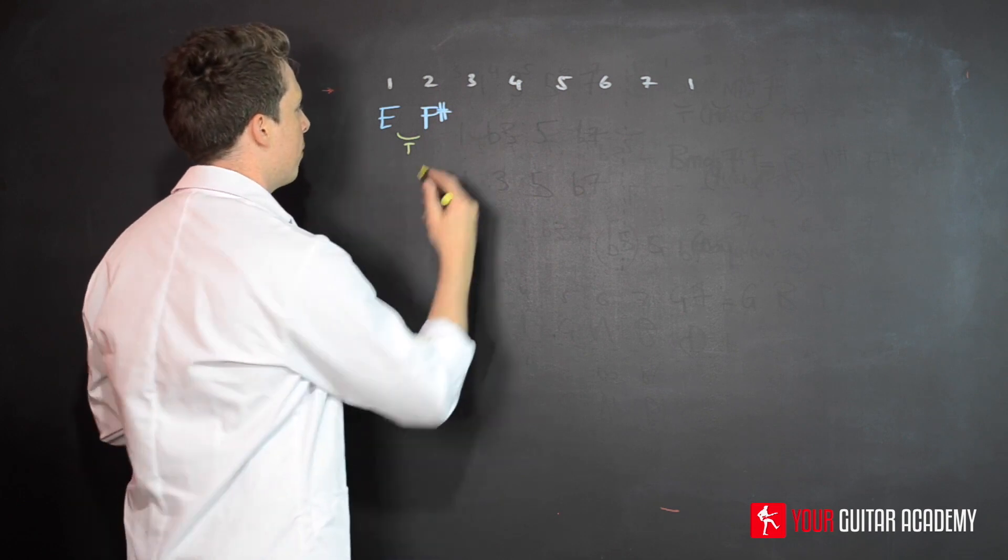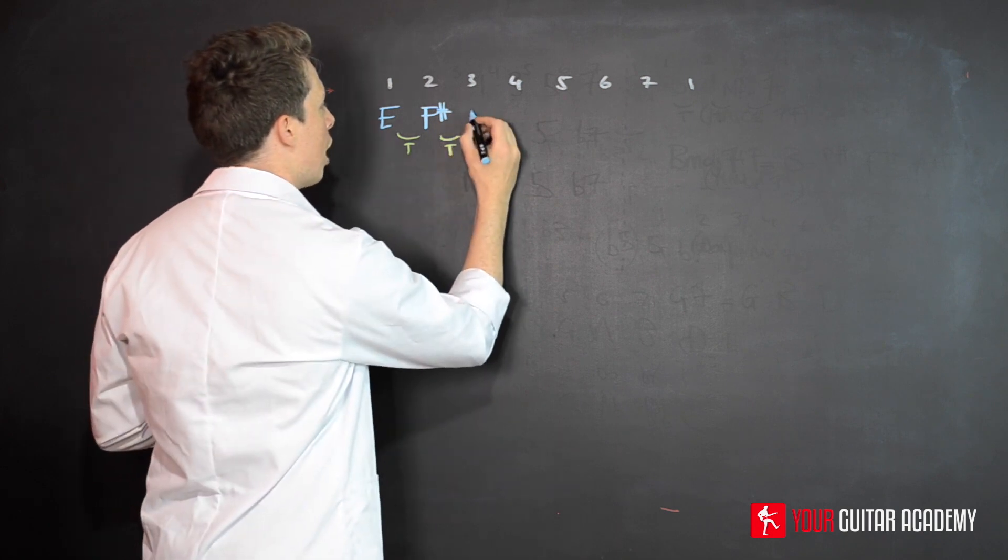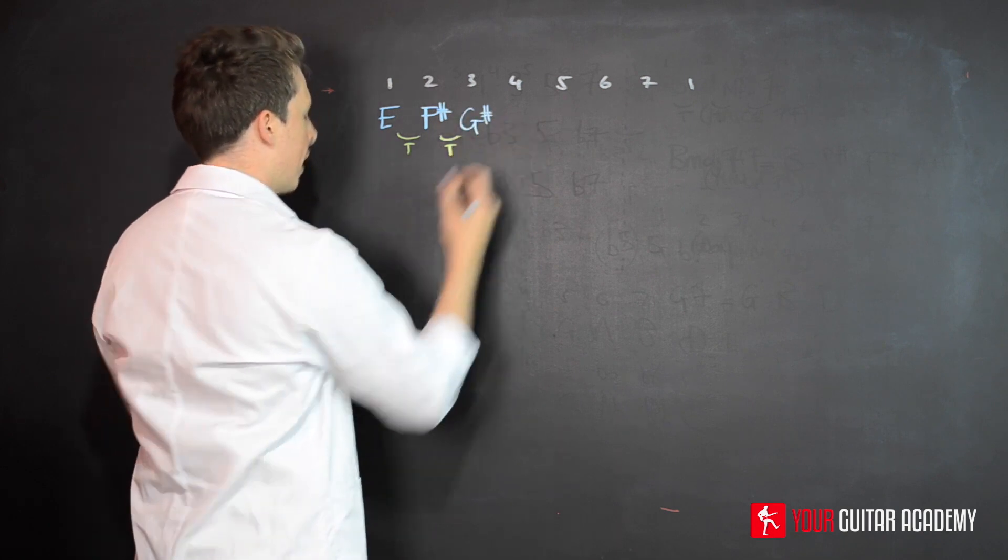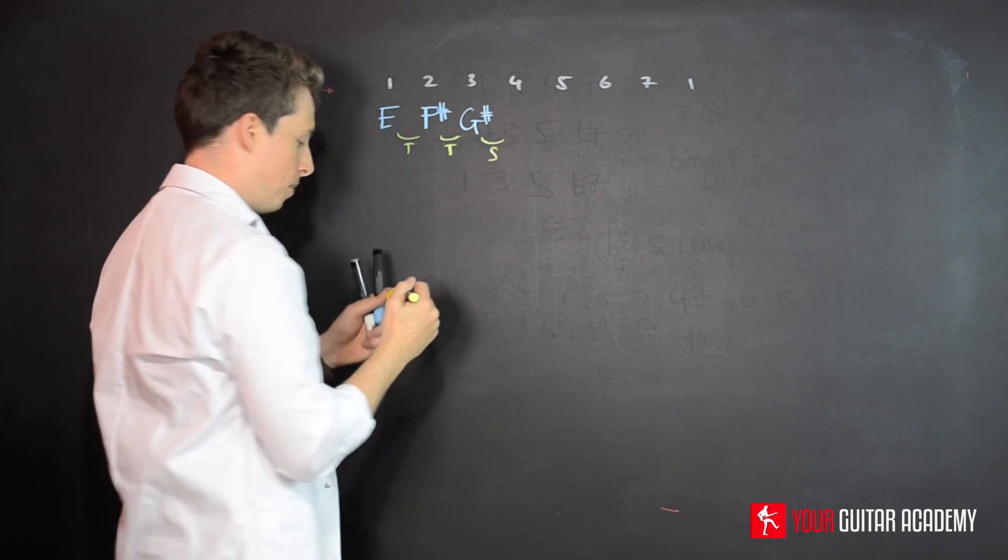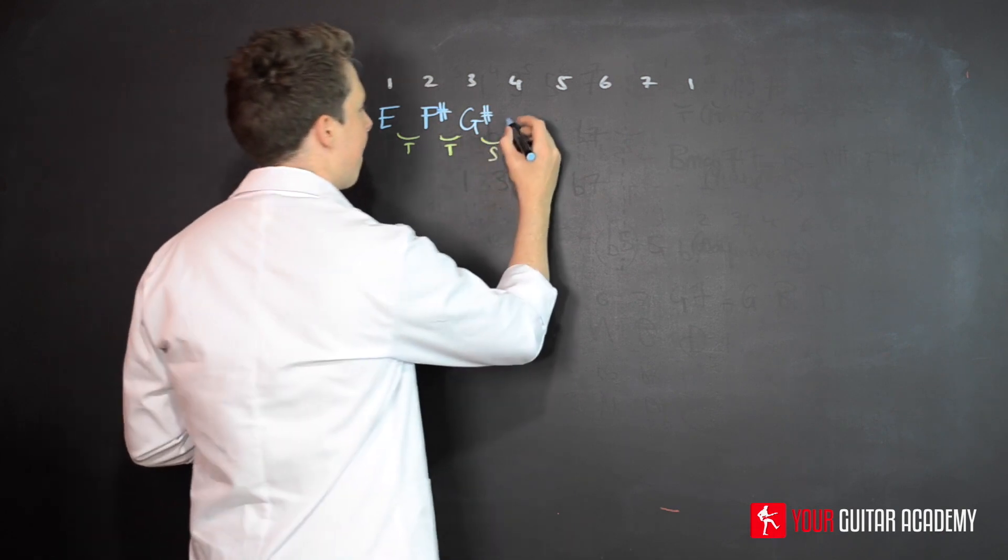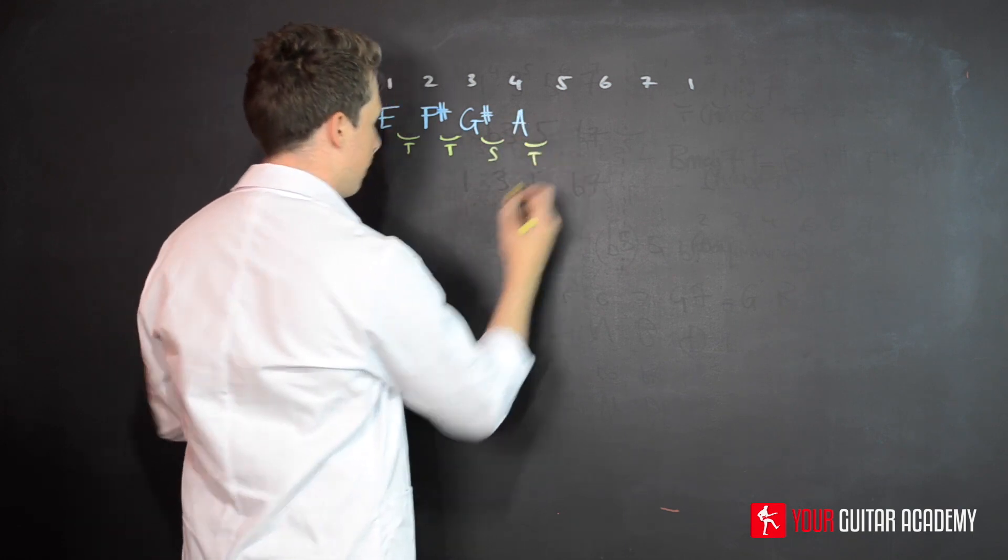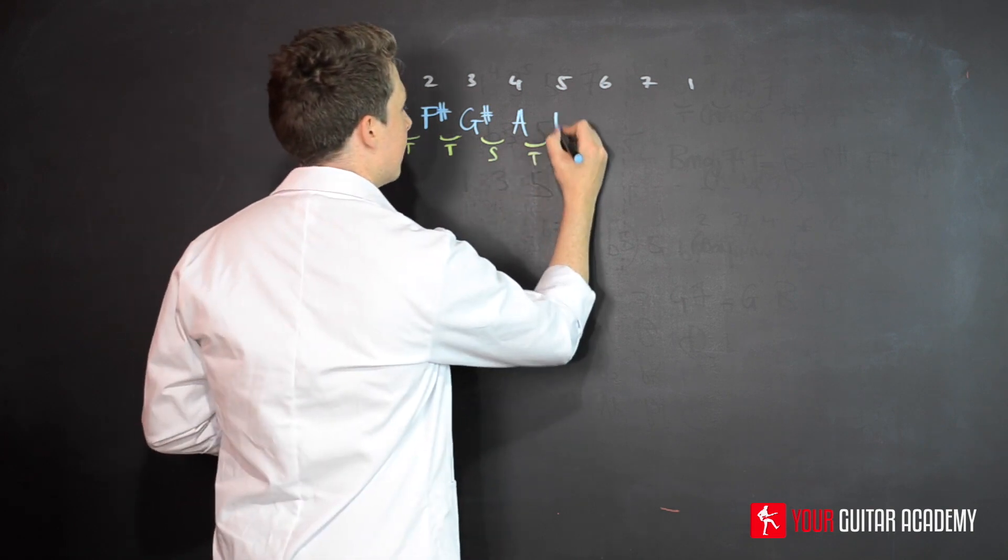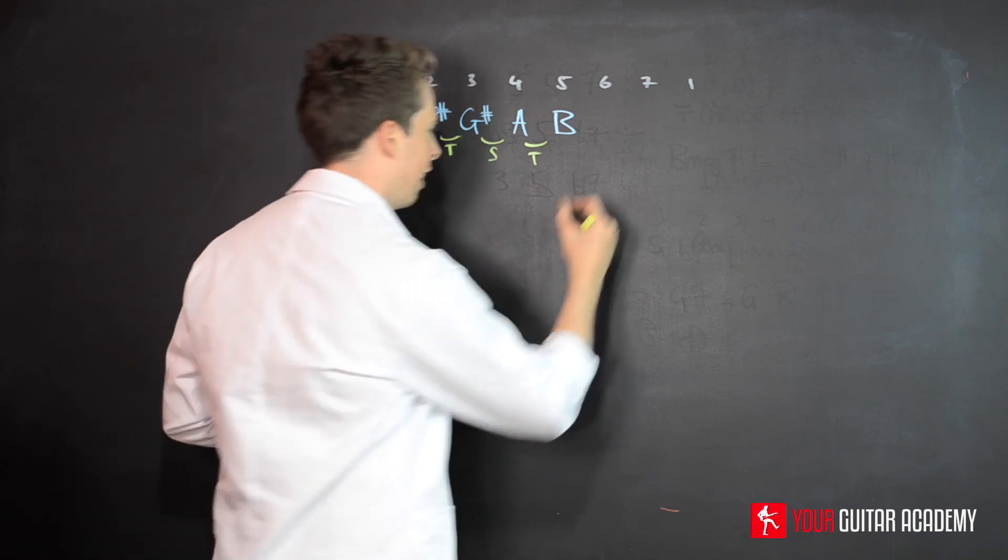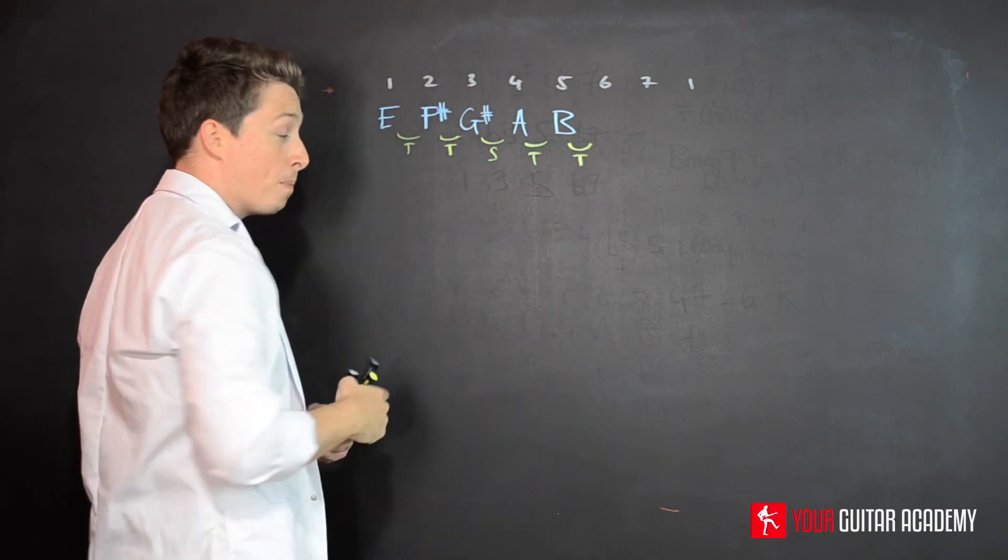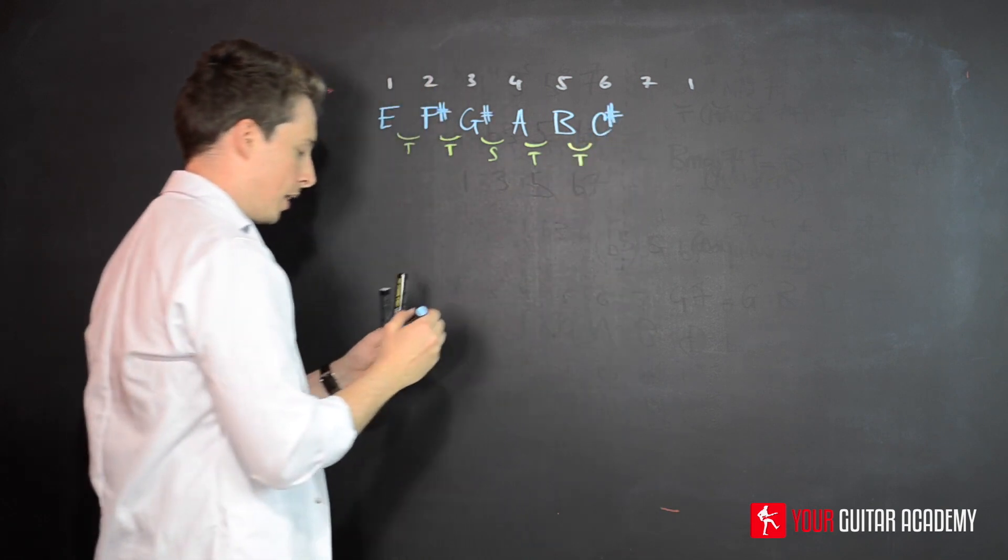Then we're going to go a tone up from F sharp - that's G sharp. Then we're going to go a semitone, so try and work it out as I'm going - semitone from G sharp is A. Now we're going to go another tone up from there, which will be B. Then another tone up from B is going to be C sharp.